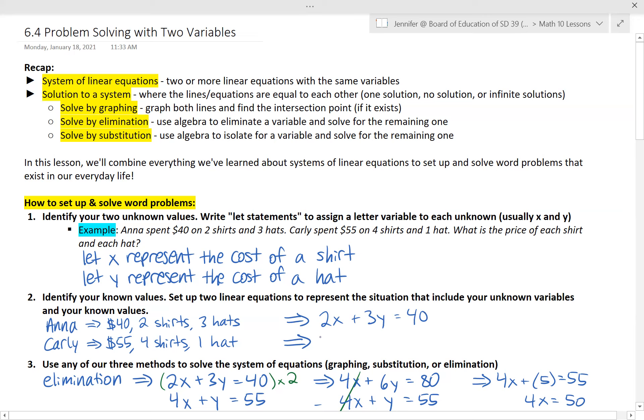Carly would be very similar. She bought four shirts at price x. She bought one hat at price y. She spent a total of $55. So that equation represents Carly's situation. In these two equations the x and y represent the same thing, the cost of the shirt or the cost of the hat. The numbers on the right side of the equation represent the total amount of money spent and the other coefficients represent how many of those shirts or hats were purchased.